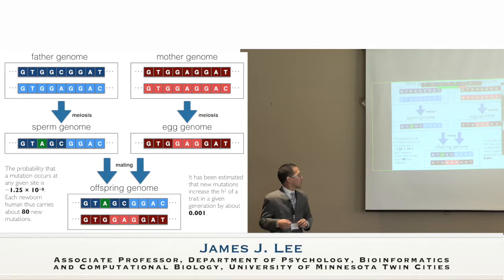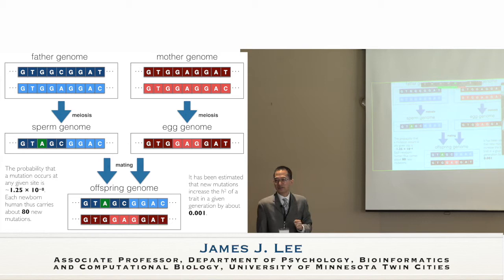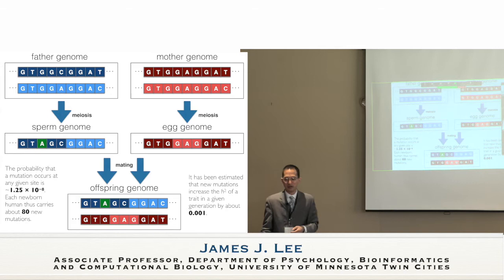Mutation is what causes genetic differences - it's what causes traits to be heritable. Various kinds of experiments have estimated that new mutations increase the heritability of a typical trait in mammals by about 0.001 every generation. That would mean if you started with a trait that had zero heritability, and mutation were the only thing happening, a thousand generations later it would be about perfectly heritable. And later we'll see why doesn't that actually happen - why don't most traits have a heritability near one?